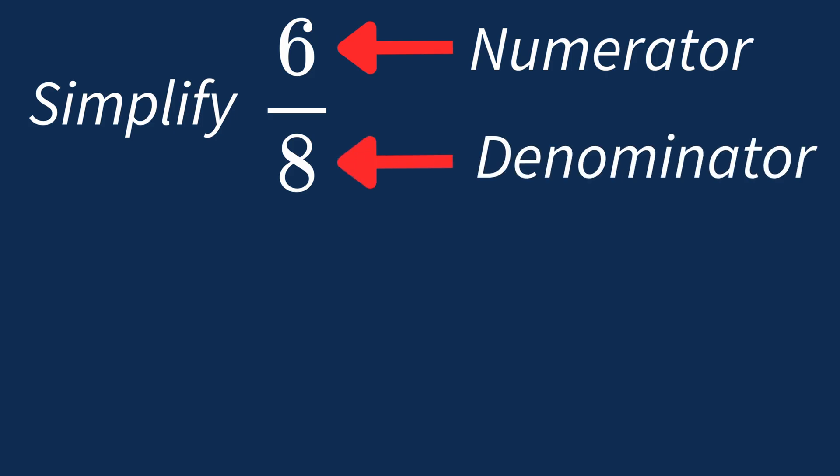A common factor is any number that divides into both numbers evenly. Let's list out the factors for each number.